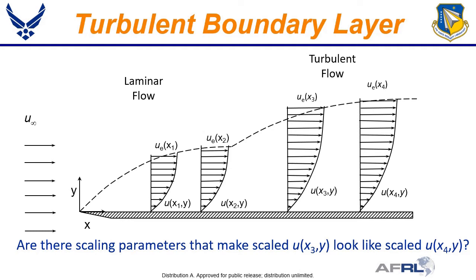A boundary layer develops along the plate in the flow direction such that the velocity is zero at the surface and gradually transitions to u_e at the boundary layer edge. When we refer to the velocity profile along the plate, we mean the velocity u at x for all y. At some point along the plate, the flow transitions from laminar to turbulent flow, and as the flow develops, the boundary layer thickness continues to grow.